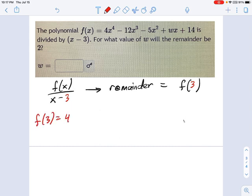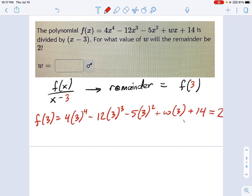F of 3 equals 4 times 3 to the fourth power minus 12 times 3 cubed minus 5 times 3 squared plus w times 3. There's that w. What is that thing? Plus 14, and all that equals 2. Remember, that's what it's telling us right here. The remainder is 2.